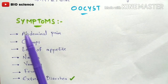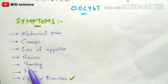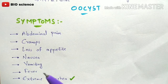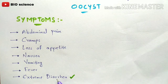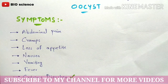The symptoms of isosporiasis include abdominal pain, cramps, loss of appetite, nausea, vomiting, and fever — these are the minor symptoms. However, extreme diarrhea is the most common symptom seen in a person affected with isosporiasis. This concludes the discussion on isosporiasis, which is also called cysto-isosporiasis.